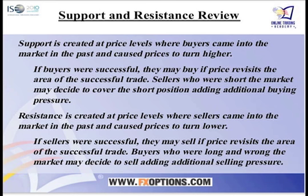Resistance is created at price levels where sellers come into the market thinking the asset is overvalued, and they start to sell, which causes prices to turn lower. If sellers were successful selling an area, they may sell again when price comes back there. And buyers who were long and wrong at the time may decide to get out with a small loss — mostly to try to save themselves some pride. I happen to know people who are still long Cisco Systems from $80 from the bear market of 2000, waiting for Cisco to get back to $80 so they can get out even — I'm not one of them, by the way.